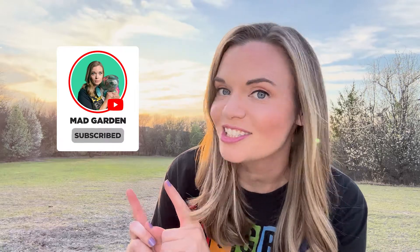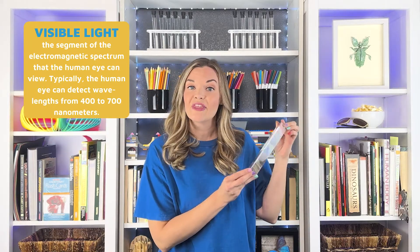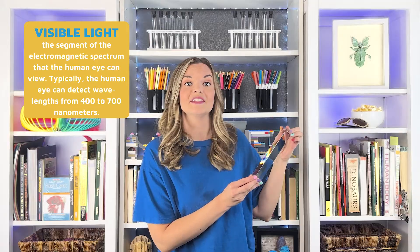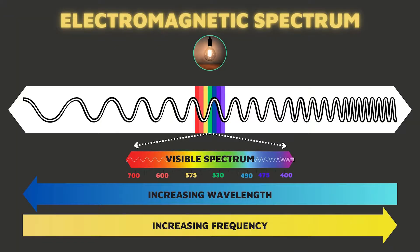Visible light is actually just a thin strand of electromagnetic radiation. From 400 nanometers to 700 nanometers, the light we can see is just going to be white light. So how do we get these different colors of light? We can break this white light down with a prism.